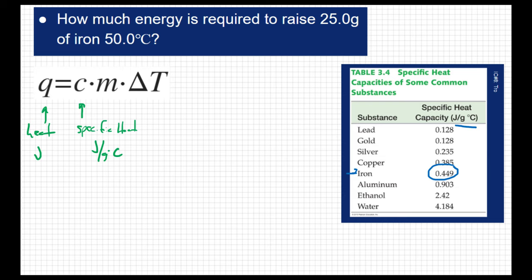And these two should be familiar to us. M is mass, that's in grams. And delta T is the change in temperature, and that's in degrees Celsius.